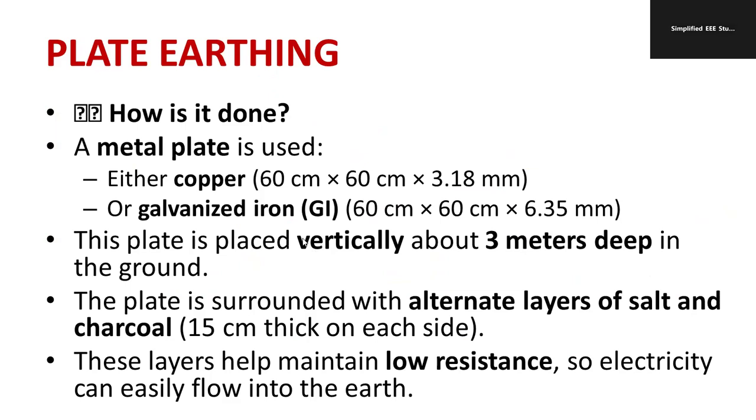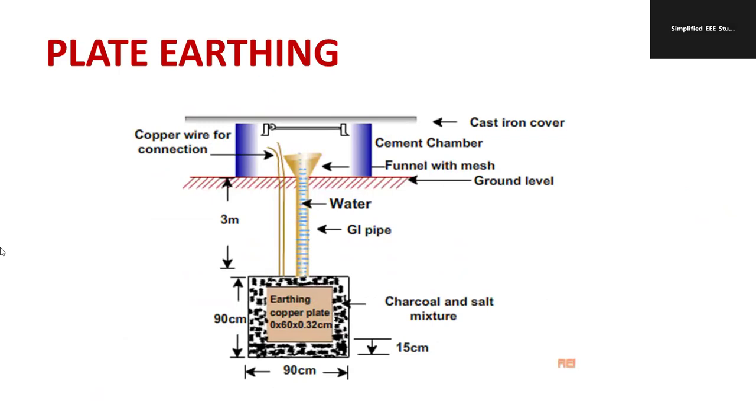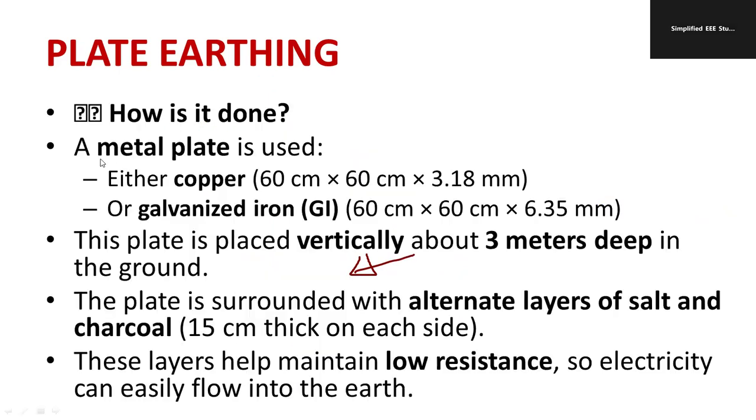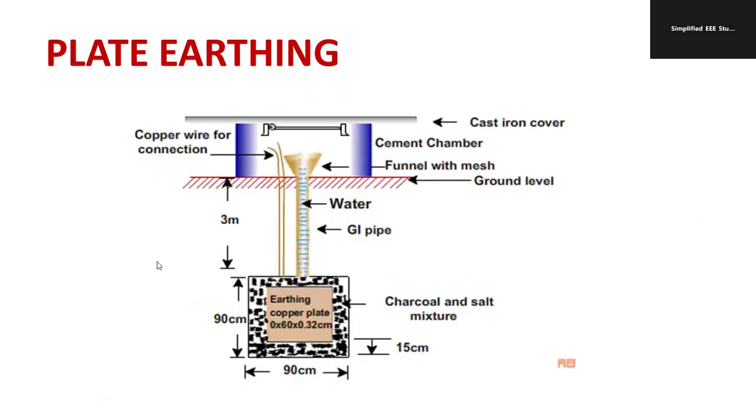So there are two types of metal plates: either you can make the metal plate using copper or galvanized iron. The dimension is 60 centimeter into 60 centimeter into 6.35 if it is made up of galvanized iron, or if you are making copper, the plate dimension should be 60 centimeter into 60 centimeter into 3.18 millimeter. So that is the dimension of the plate which we are going to use for earthing.